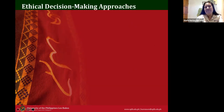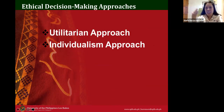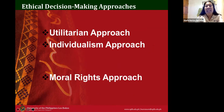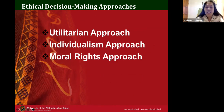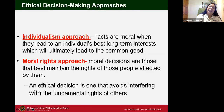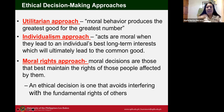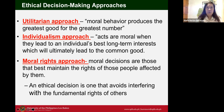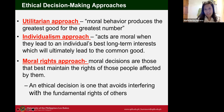What are the decision-making approaches? There are four: the utilitarian approach, the individualism approach, the moral rights approach, and the justice approach. These approaches can be combined by an organization — they are not mutually exclusive. The utilitarian approach is moral behavior that produces the greatest good for the greatest number.